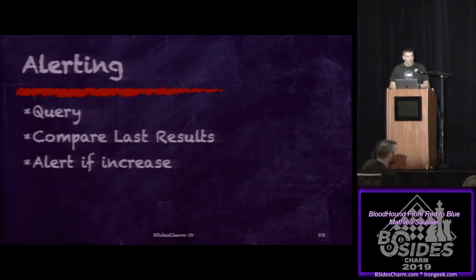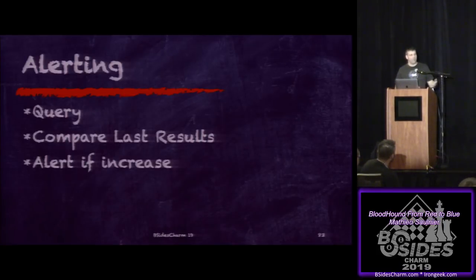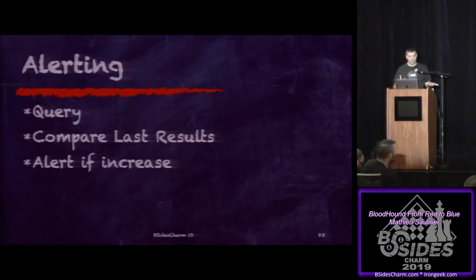You can also set up alerting: run the same query week-over-week or month-over-month, compare with the last result, and alert if a number increases. For example, if this month you have one Kerberoastable account in a high-value group and next month you have three, you want to investigate why — create a ticket, determine if it's legitimate, and then adjust accordingly.